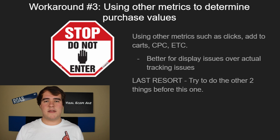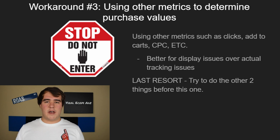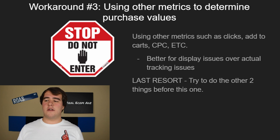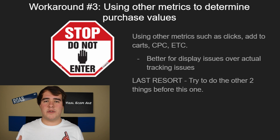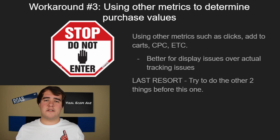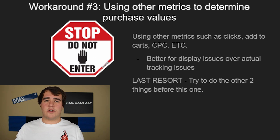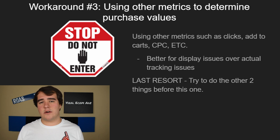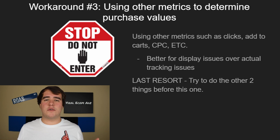The last method is one I don't necessarily recommend for everyone — it's more of a unique situation where the other two options definitely won't work. Workaround number three is using other metrics to determine what a good ad set is: clicks, add-to-carts, checkouts, CPC, etc. This is honestly more for display issues rather than tracking issues. We've run into accounts that track purchases just fine, but they're just not displaying in Ads Manager in a way where we can see which ad set brought the sales.